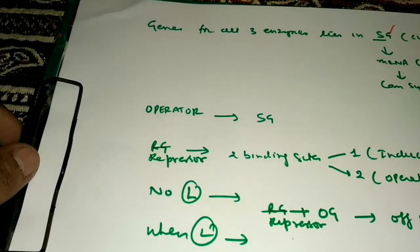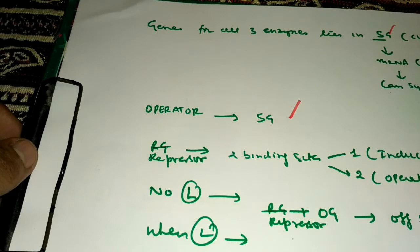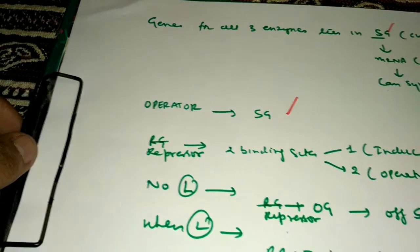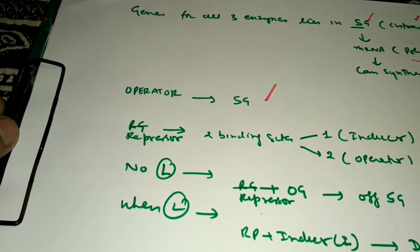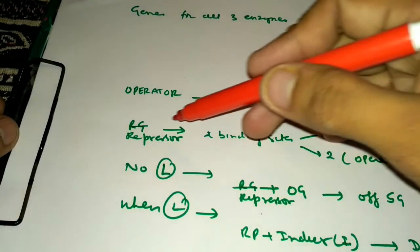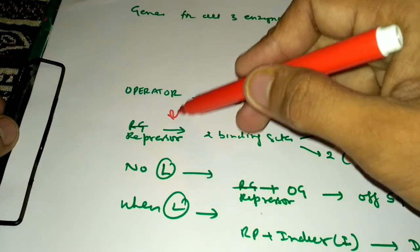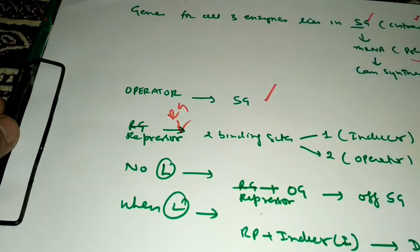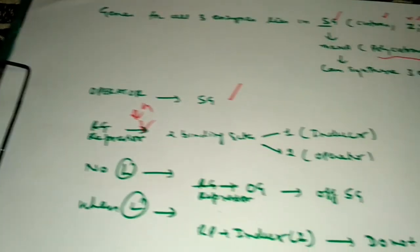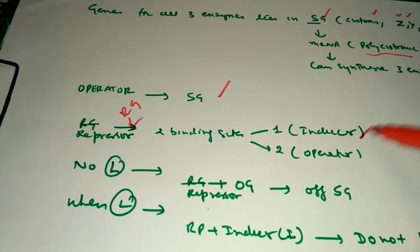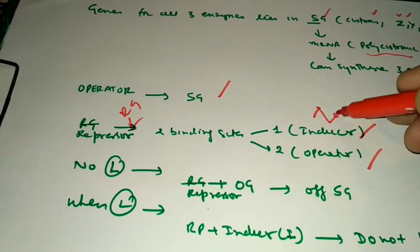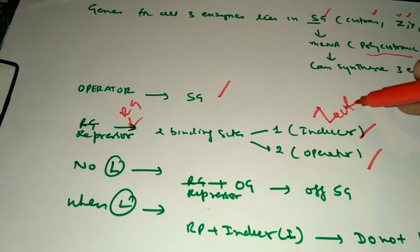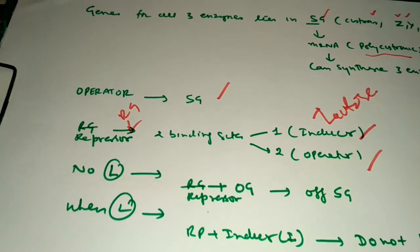There is an operator gene that regulates the structural gene. The regulator gene synthesizes a repressor that has two binding sites: one for the inducer and one for the operator. Here the inducer is lactose, hence the name lactose pathway.